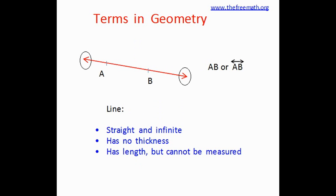And you see a little line above AB that shows that this is a line. Line has no thickness but it has length. But you cannot measure the length. Why? Because it's infinite. There is no end to it.